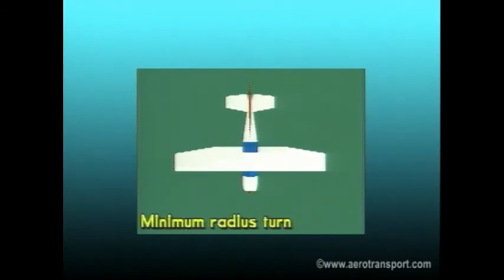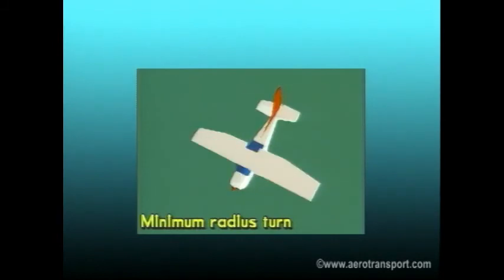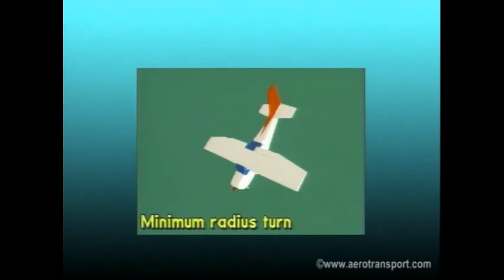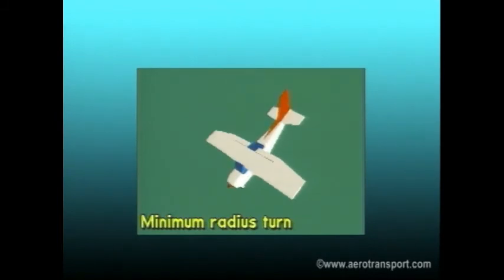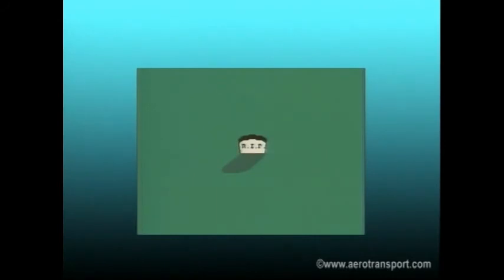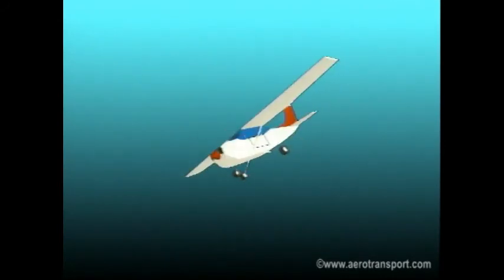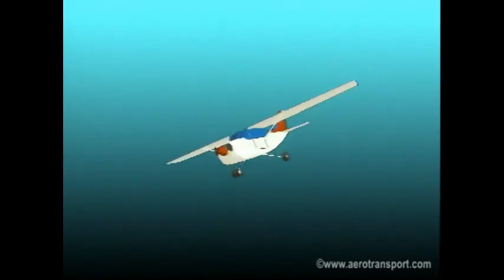To get into a minimum radius turn, first check the sky for any other traffic, then get your aircraft into the attitude and airspeed for endurance in straight and level flight. Now enter the turn as before. Some things to watch out for: if the bank becomes too steep, the plane slips toward the center of the turn and the nose pitches down. If this is not quickly corrected, the turn can develop into a spiral and the consequences could be fatal.